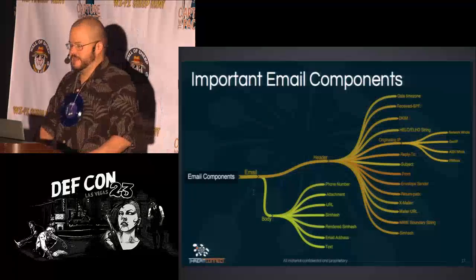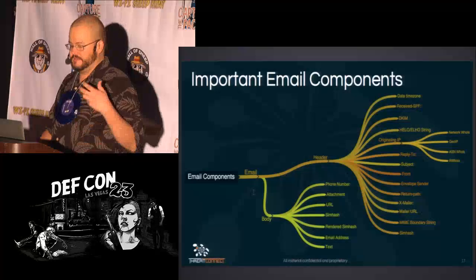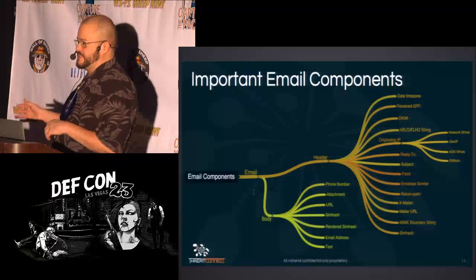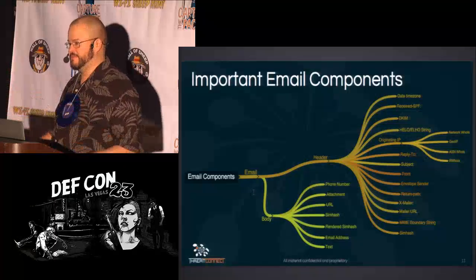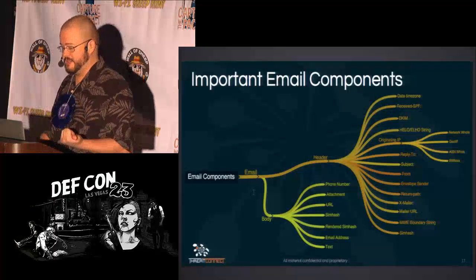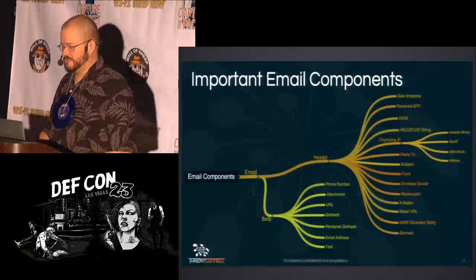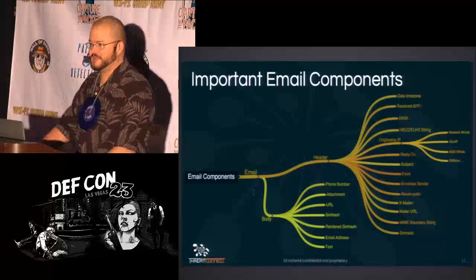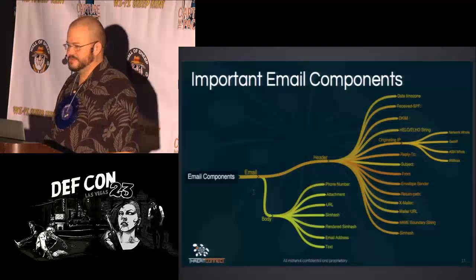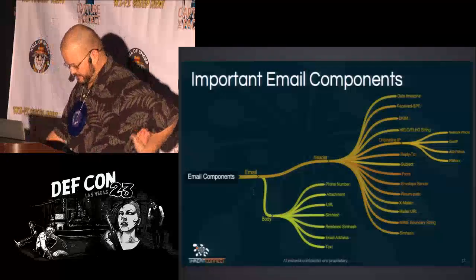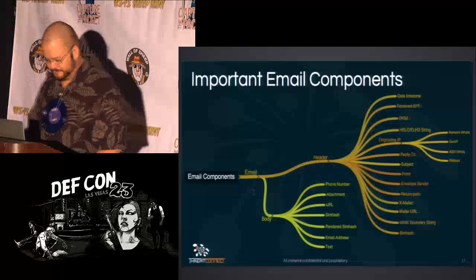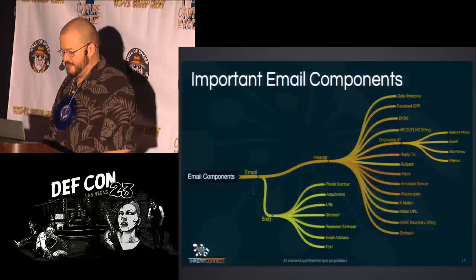Reply-to is important — when dealing with 419 scams or advance fee fraud, the adversary needs to collect replies, so typically the reply-to address is not forged. As long as it still exists and hasn't been taken down, some slimeball is actually reading email that comes into it. Subject is obviously a valuable indicator. The from address is typically forged and can say almost anything — it might even be different from the reply-to.